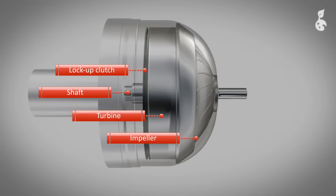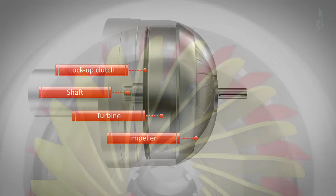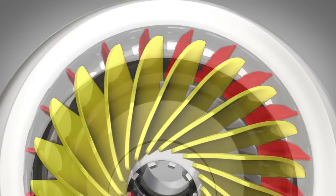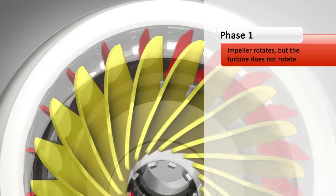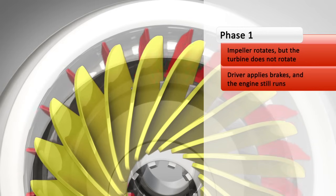Torque converters have three stages of operation. The first phase is called stall. Here, the engine applies power to the impeller, but the turbine does not rotate, because the driver keeps his or her foot on the brake at traffic lights. So the vehicle does not move.